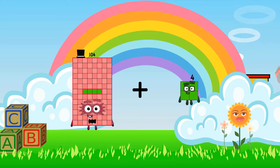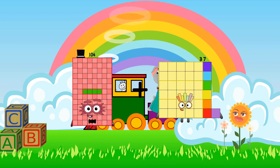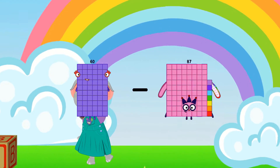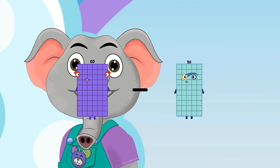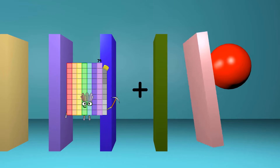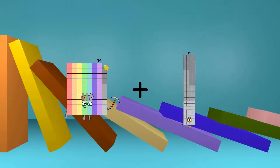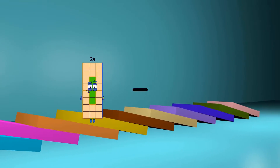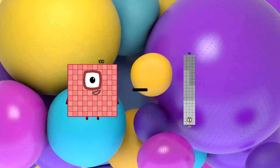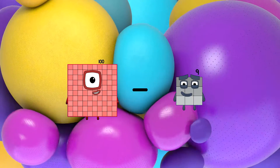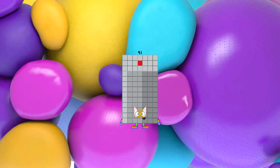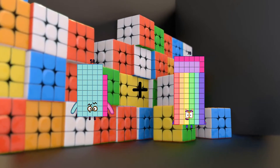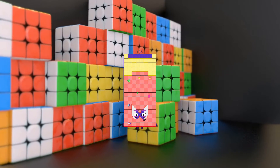104 plus 37 equals 141. 60 minus 50 equals 10. 79 plus 55 equals 134. 100 minus 9 equals 91. 58 plus 78 equals 136.